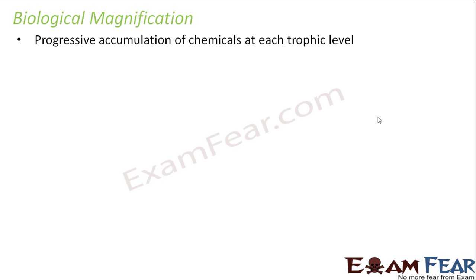Harmful, poisonous things can enter the food chain. For example, there are many pesticides and insecticides used in fields for improvement in crop yield. These chemicals either remain in the soil or get washed away with water. From the soil they can easily enter into plants, and once they enter plants, they have entered the food chain because plants are the producers and all living organisms depend on them.